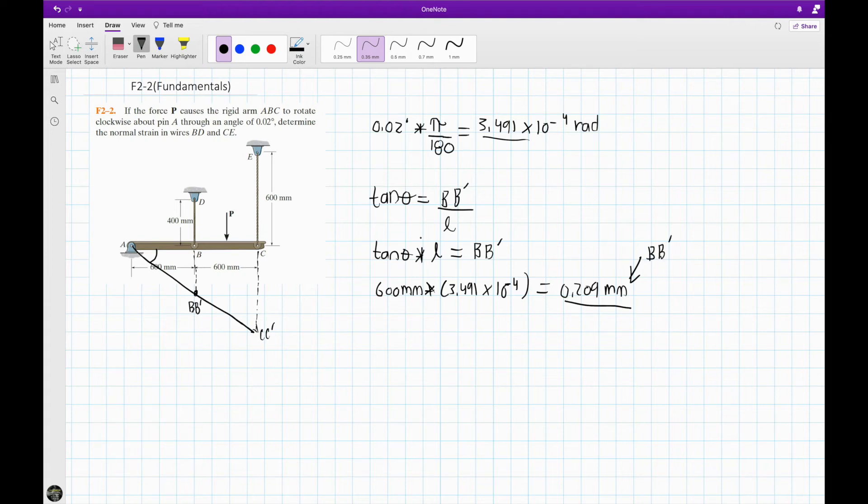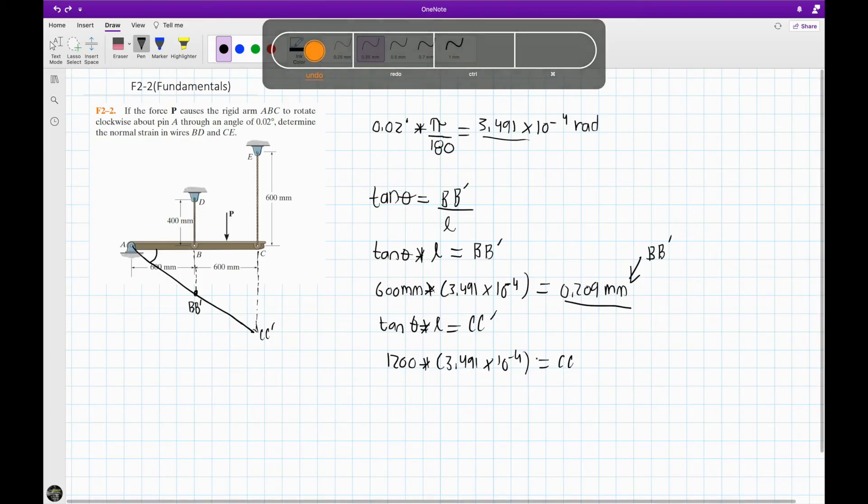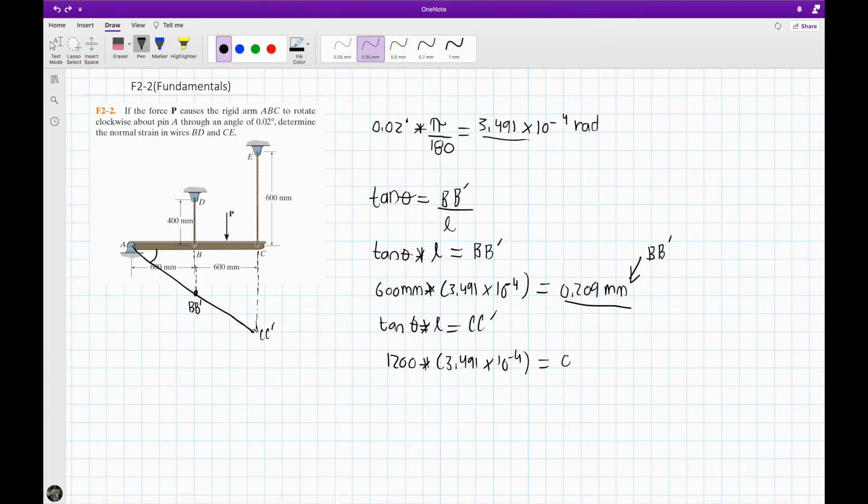Now we follow the same process and do it for the CC dash. Tan theta times L equals CC dash. We substitute. We have a length of 600 plus 600 is 1,200 times your tan theta, which is your radians because you converted it. So we get times 3.491 times 10 to -4 equals CC dash. Which gives us, we enter this in the calculator and we get 0.419 millimeters. These are CC dash.